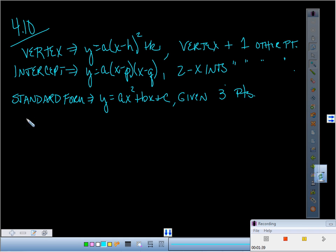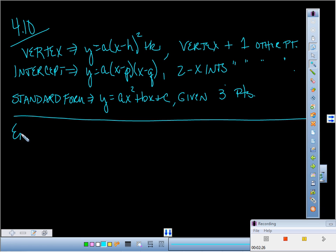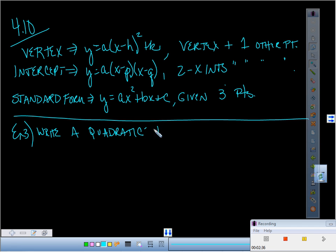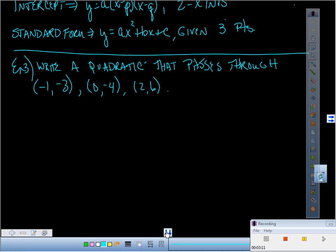So here's the way we're going to work. Example three: Write a quadratic that passes through negative one, negative three; zero, negative four; and two, six. All right, you ready? Here we go.